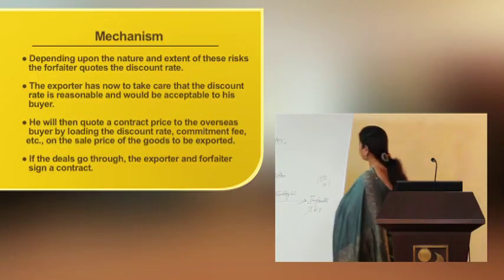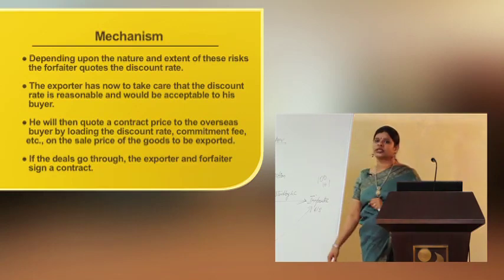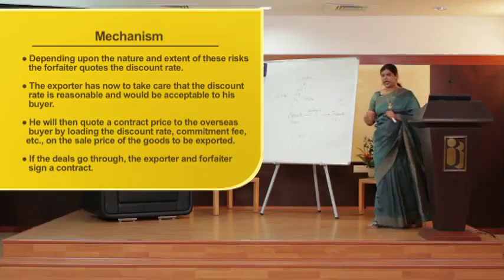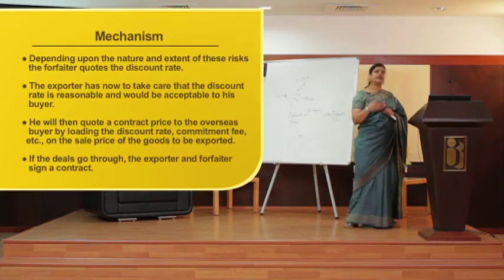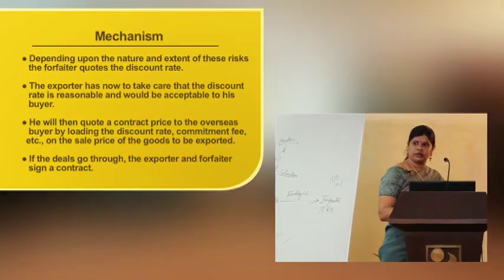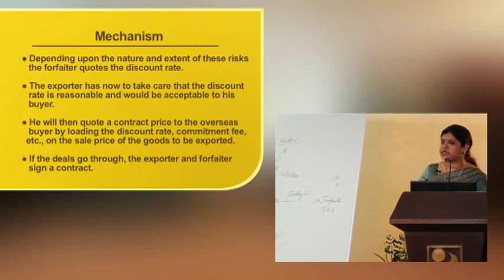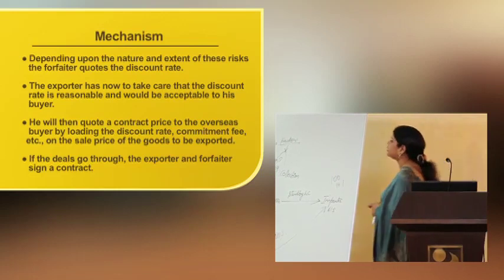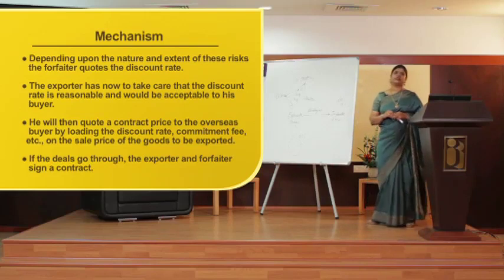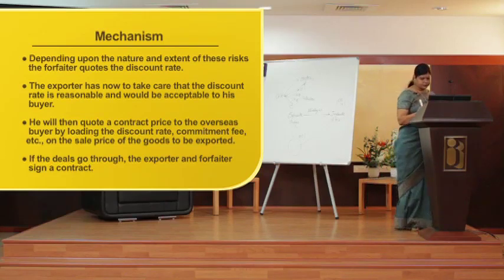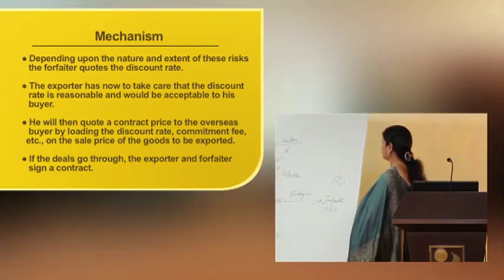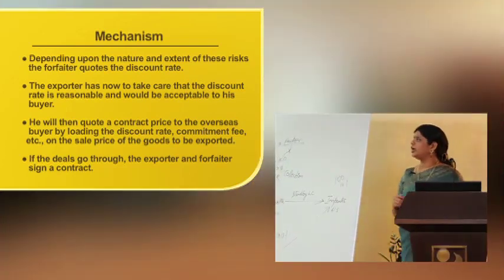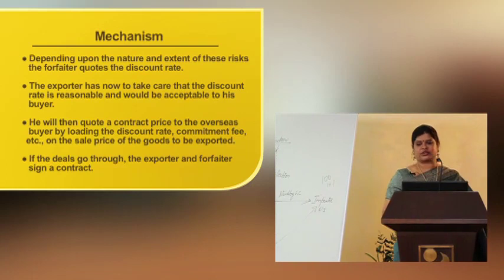Depending upon the nature and extent of these risks, the forfeiter quotes the discount rate. If the risk is high, the discount will be high; if the risk is less, they can give a lesser discount rate. The exporter has to ensure that the discount rate is reasonable and acceptable to his buyer. He will then quote a contract price to the overseas buyer by loading the discount rate, commitment fee, etc. on the sale price of the goods to be exported.